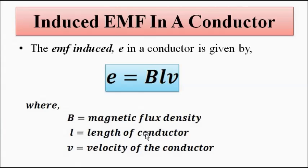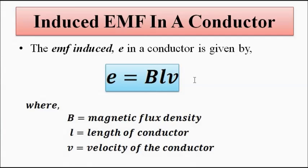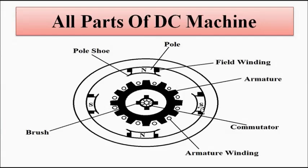Now, from our discussion of the linear DC machine, we know that the EMF induced in a conductor when it rotates in a magnetic field — as per Fleming's rule — is e = Blv, where e is the induced EMF, B is the magnetic flux density, l is the length of the conductor, and v is the velocity of rotation of the conductor in the magnetic field. This is the generator action we discussed in the linear DC machine video.